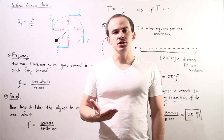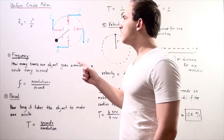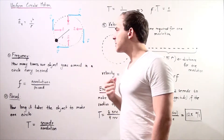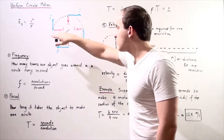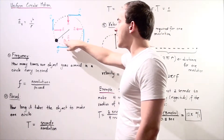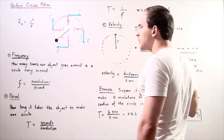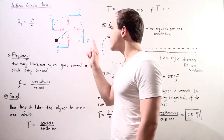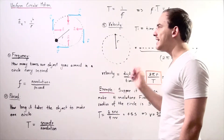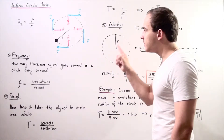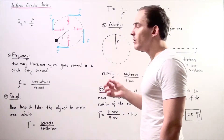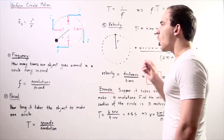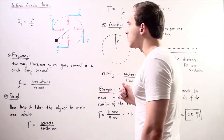Let's continue our discussion on objects moving in uniform circular motion. Suppose we have an object following a circular pathway, where lowercase r is the radius. Notice that the velocity vector and acceleration vectors are exactly perpendicular to one another. The velocity vector is always tangent to the circle, and the acceleration vector always points towards the center of the circle.